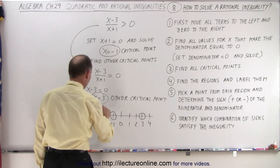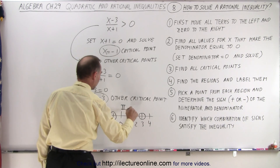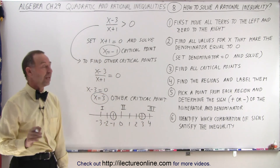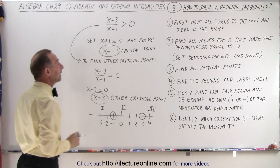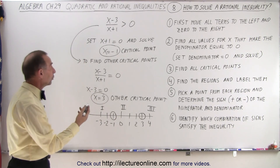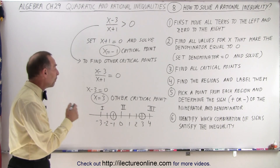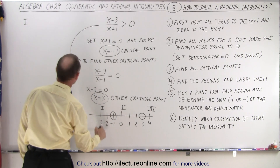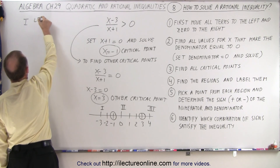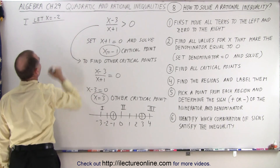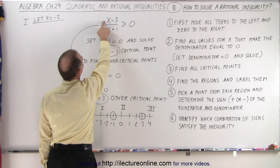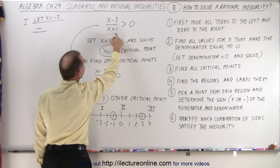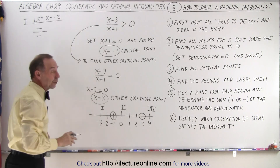So we have three regions: region number one, region number two, and region number three. We're going to pick a test point out of each region. We're not going to actually solve the inequality — we're simply going to figure out if the numerator or the denominator is negative or positive. For region number one, we're going to let x equal negative two. Negative two minus three is negative five — that's a negative number. Negative two plus one is also a negative number.